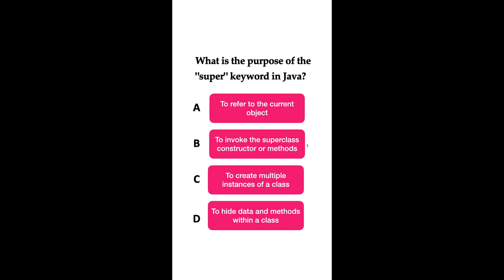The correct answer is option B: to invoke the superclass constructor or methods. The super keyword in Java is used to refer to the superclass or parent class of the current object. It is commonly used to invoke the superclass constructor or methods within a subclass.